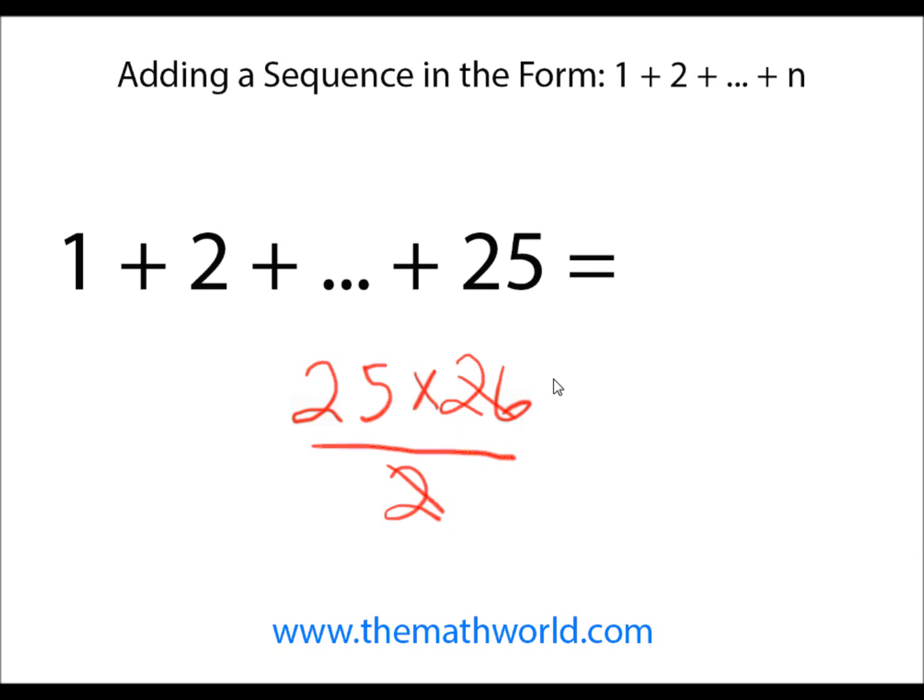We can reduce this, 26 to 13. And then we have 25 times 13. There's another video on how to multiply numbers by 25, a nice little trick. But 4 goes into 13 three times with a remainder of 1 so we can write down 325. So 1 plus 2 plus 3 all the way to 25 is 325.